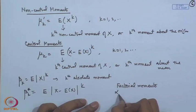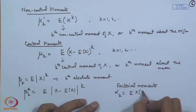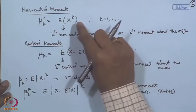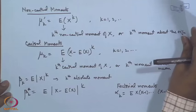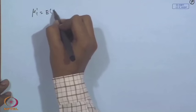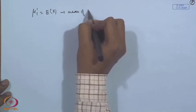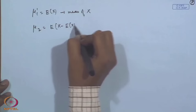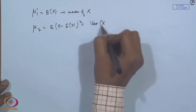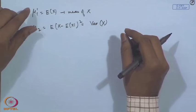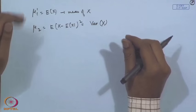We can also define absolute moments such as E[|X|^k], and factorial moments such as E[X(X−1)···(X−k+1)]. The first non-central moment μ'_1 = E[X] is the mean. The second central moment μ_2 = E[(X − E[X])²] is the variance. So non-central and central moments are generalizations of mean and variance.